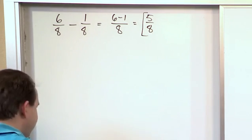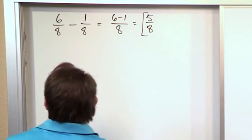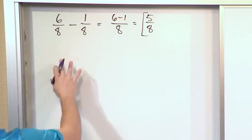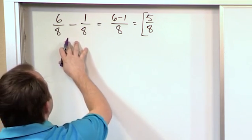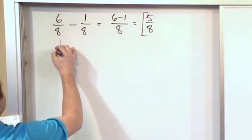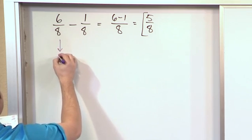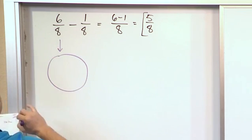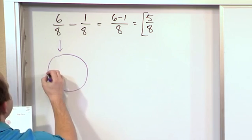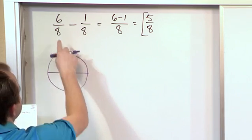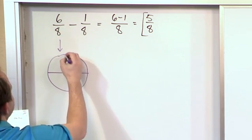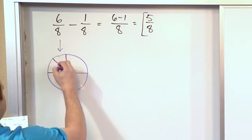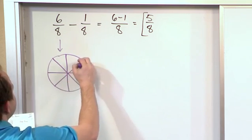Now, let's spend a few minutes drawing a quick picture to see what this fraction subtraction looks like visually. If I had a pizza or a pie, and I were to cut it into eight pieces — because that's what my denominator says — I cut it into fourths, and then I do a big X through the center.